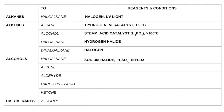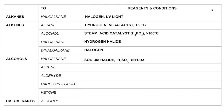For alcohol to haloalkane, you react it with a sodium halide — such as sodium chloride or sodium bromide — with sulfuric acid, and you would need to reflux. For alcohol to alkene, you react the alcohol with an acid catalyst — you could use phosphoric